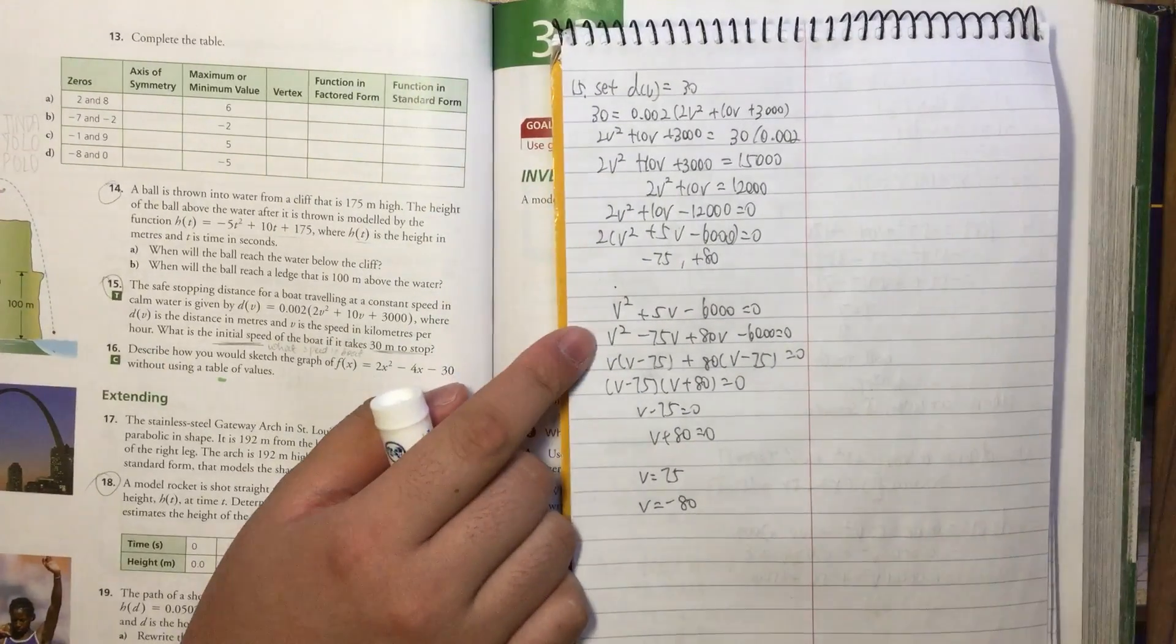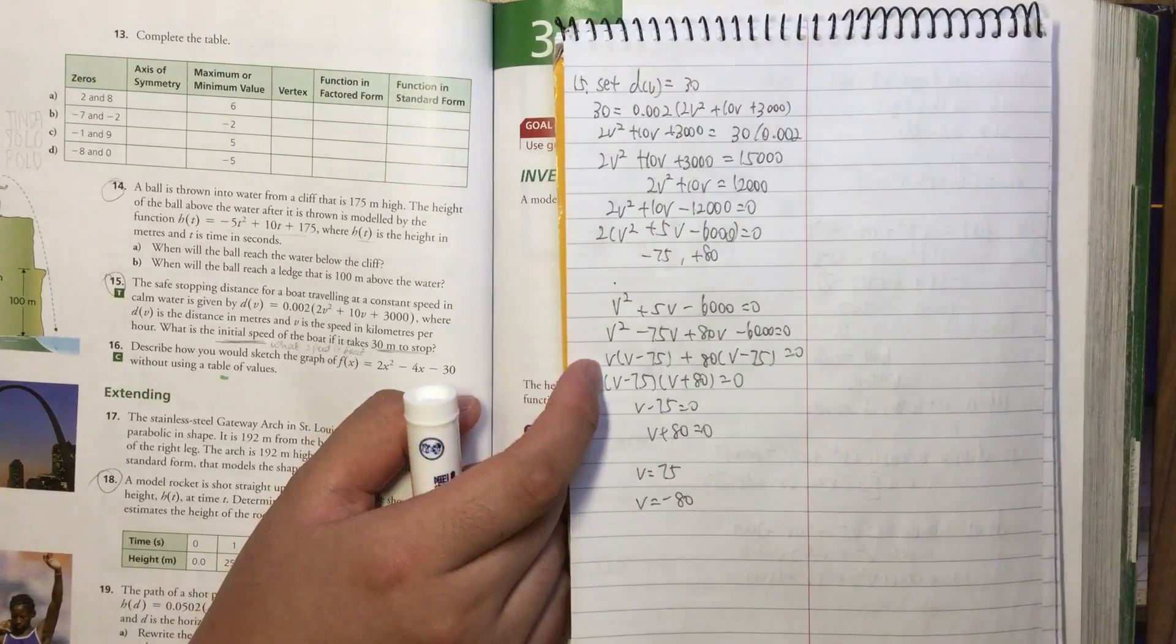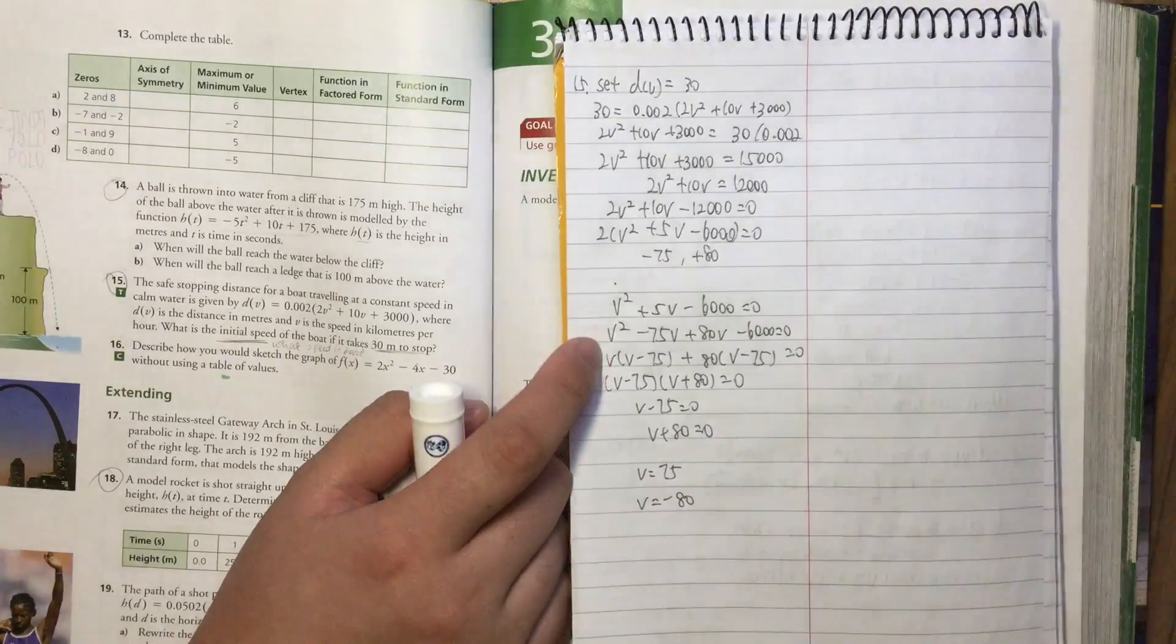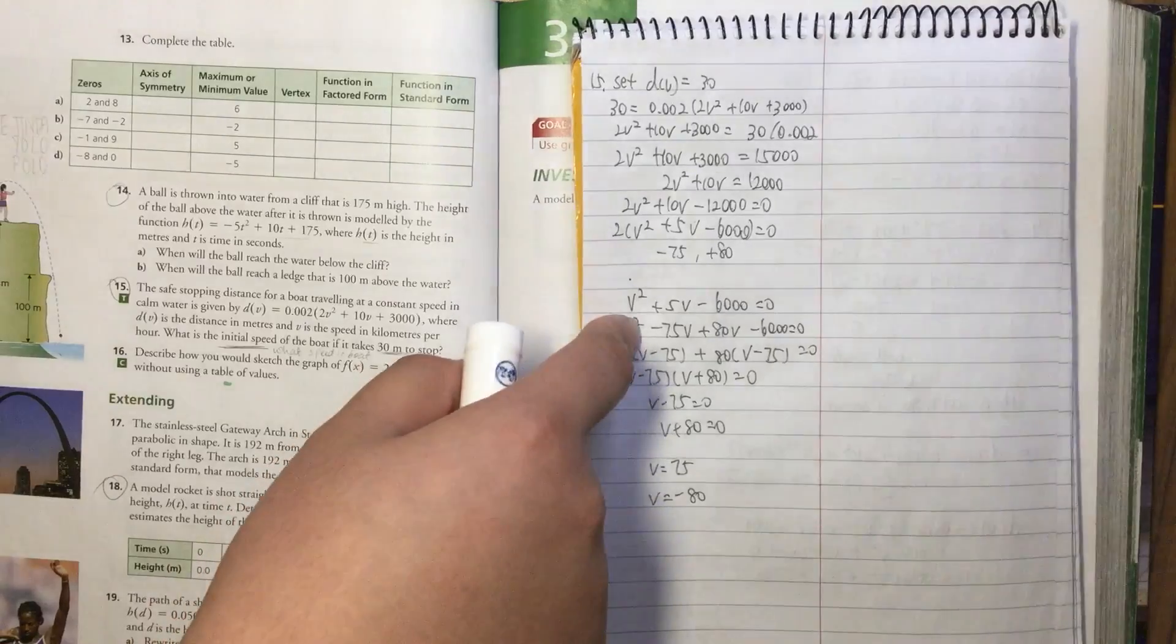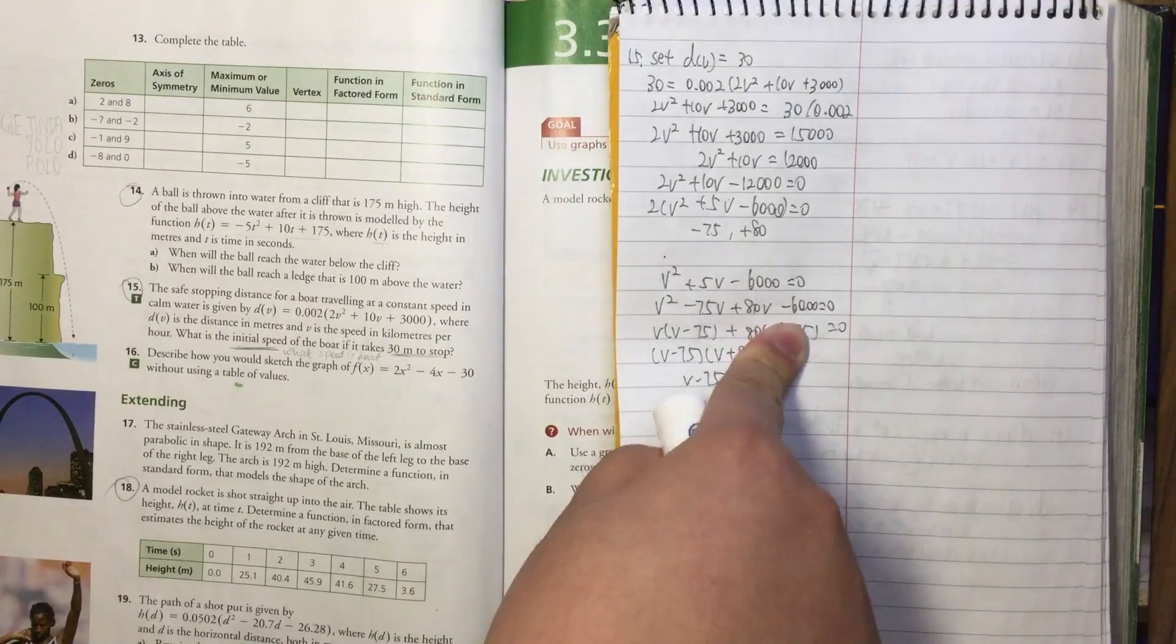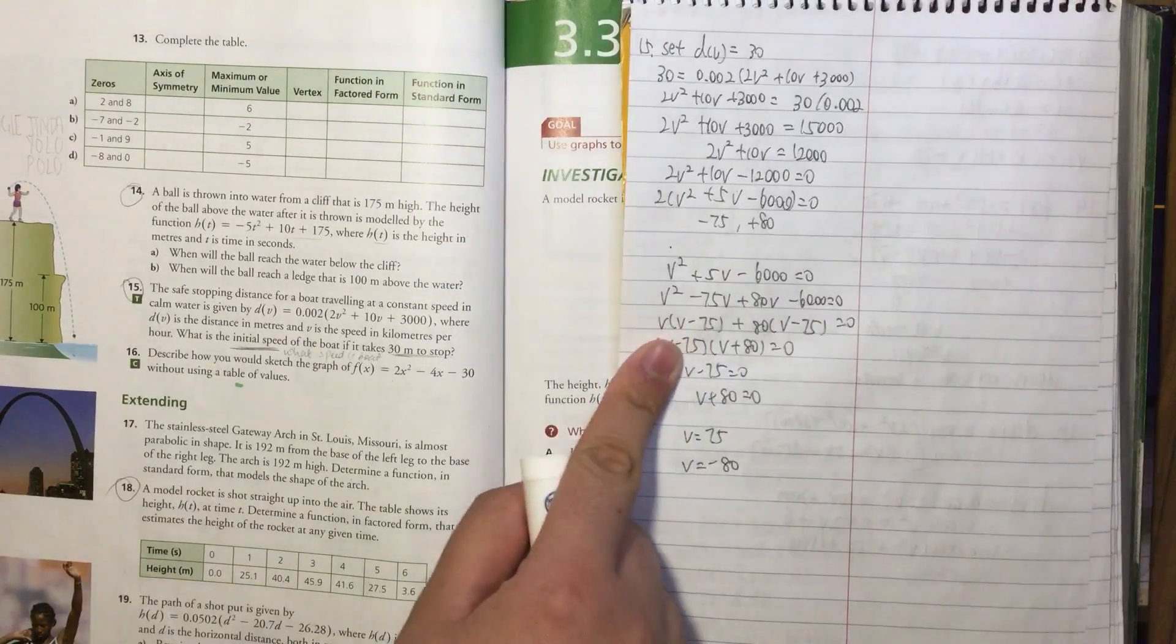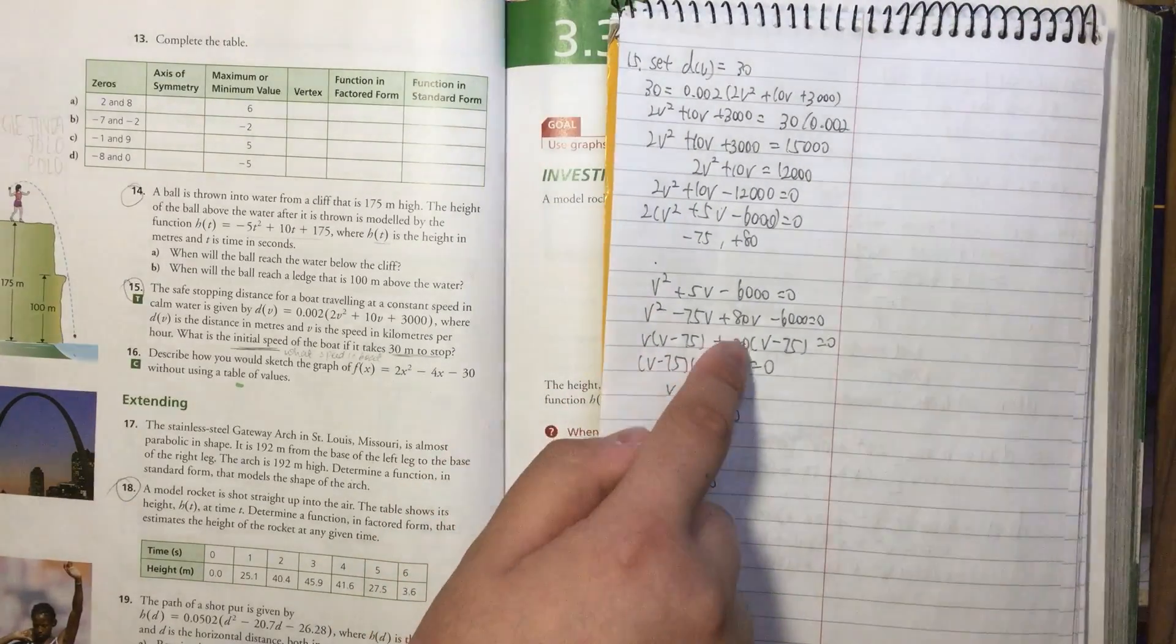After that I start factoring the equation. I use the original way: V² - 75V + 80V - 6,000 = 0. For this side we take out V.